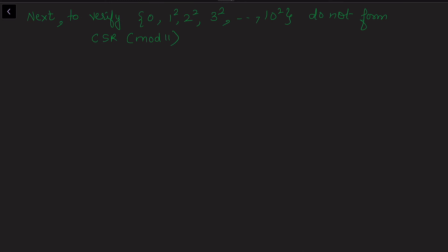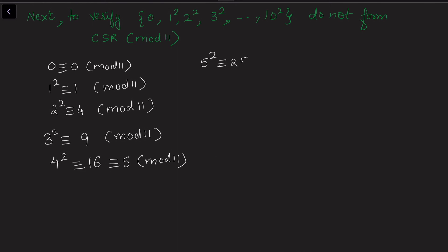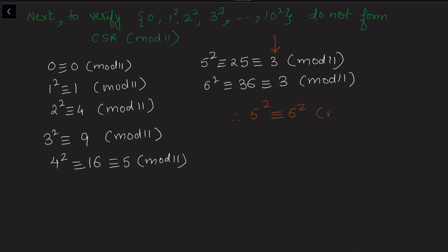Next we need to verify that {0², 1², 2², 3², ..., 10²} does NOT form a complete set of residues mod 11. Similarly: 0² ≡ 0 (mod 11); 1² ≡ 1 (mod 11); 2² ≡ 4 (mod 11); 3² = 9 ≡ 9 (mod 11); 4² = 16 ≡ 5 (mod 11); 5² = 25 ≡ 3 (mod 11) since 25 − 3 = 22 is divisible by 11; 6² = 36 ≡ 3 (mod 11). Now we see that 3 is repeating — both 5² and 6² give residue 3.